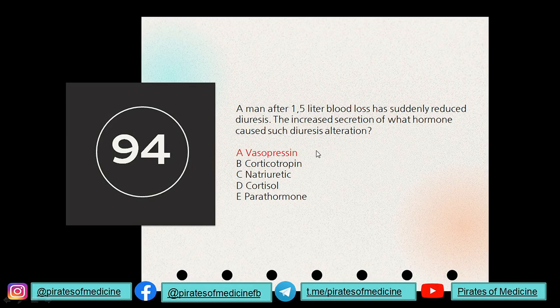Question 94: a man with 1.5-liter blood loss has suddenly reduced diuresis. The increased secretion of what hormone caused this diuresis alteration? After hemorrhage, the body starts compensatory mechanisms. Blood volume decreases, so the body releases two hormones: adrenaline — which vasoconstricts and increases heart activity — and vasopressin, which decreases excretion of water from the kidneys and sweat glands, thereby reducing diuresis.